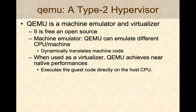When used as a virtualizer, QEMU achieves near-native performance because, to the maximum extent possible, the guest code directly runs on the host CPU. Most of the safe instructions are directly executing on the guest code, and only a few of the special or unsafe instructions are managed by QEMU with the virtualizer.